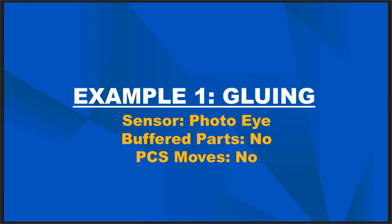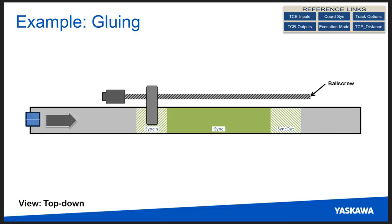Our first example is gluing. We're going to use a photo-eye as our sensor, no parts buffered, one at a time, and no PCS moves during the application. One real-world example is a cut-to-length application where you feed wood and move along with it while cutting. We've traditionally used camming for this, but conveyor tracking eliminates the need to always return to the beginning point.